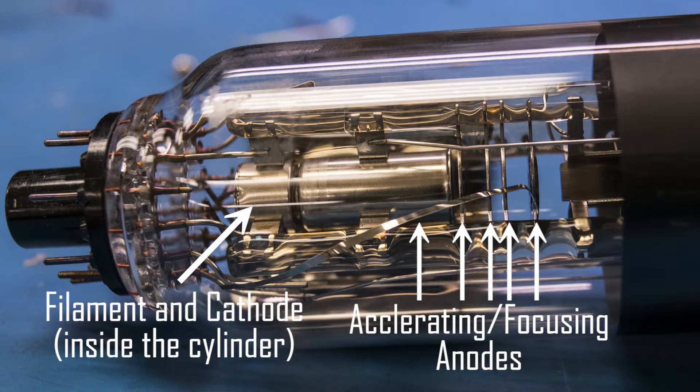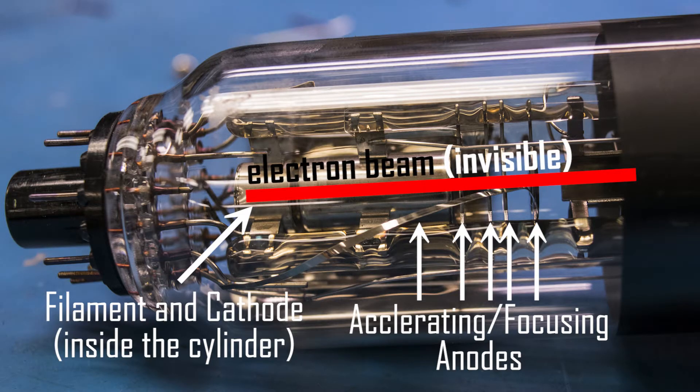With the filament all heated up, a high voltage potential is placed between it and a few other accelerating and focusing anodes in the electron gun. This high voltage potential between the electron-filled filament and the anodes causes the electrons to jump from the cathode and be accelerated towards the anodes. This produces a high-intensity beam of concentrated electrons, which is exactly what we want for this cathode ray tube to work.